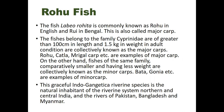Other major carps include Catla and Mrigal. On the other hand, fishes of the same family Cyprinidae that are smaller in size and have less weight are called minor carp. So major and minor carp classification indicates their size and weight. Examples of minor carp include Bata and Gonia.